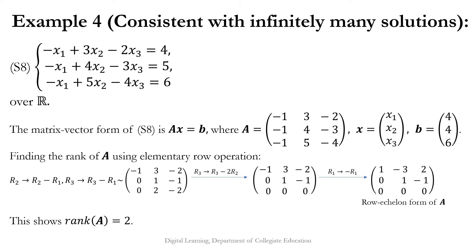Applying elementary row operations on A: R2 → R2 − R1 and R3 → R3 − R1 gives −1, 3, −2; 0, 1, −1; 0, 2, −2. Then R3 → R3 − 2R2 gives −1, 3, −2; 0, 1, −1; 0, 0, 0. Finally R1 → −R1 gives 1, −3, 2; 0, 1, −1; 0, 0, 0. This row echelon form has only two non-zero rows, so rank(A) = 2.